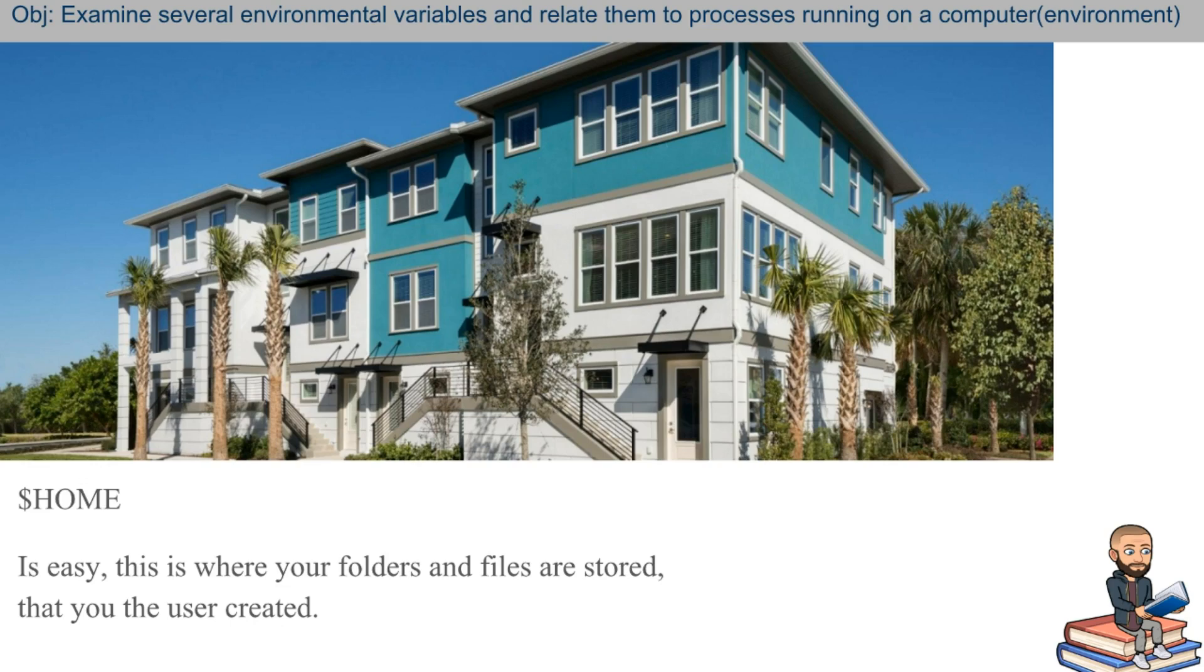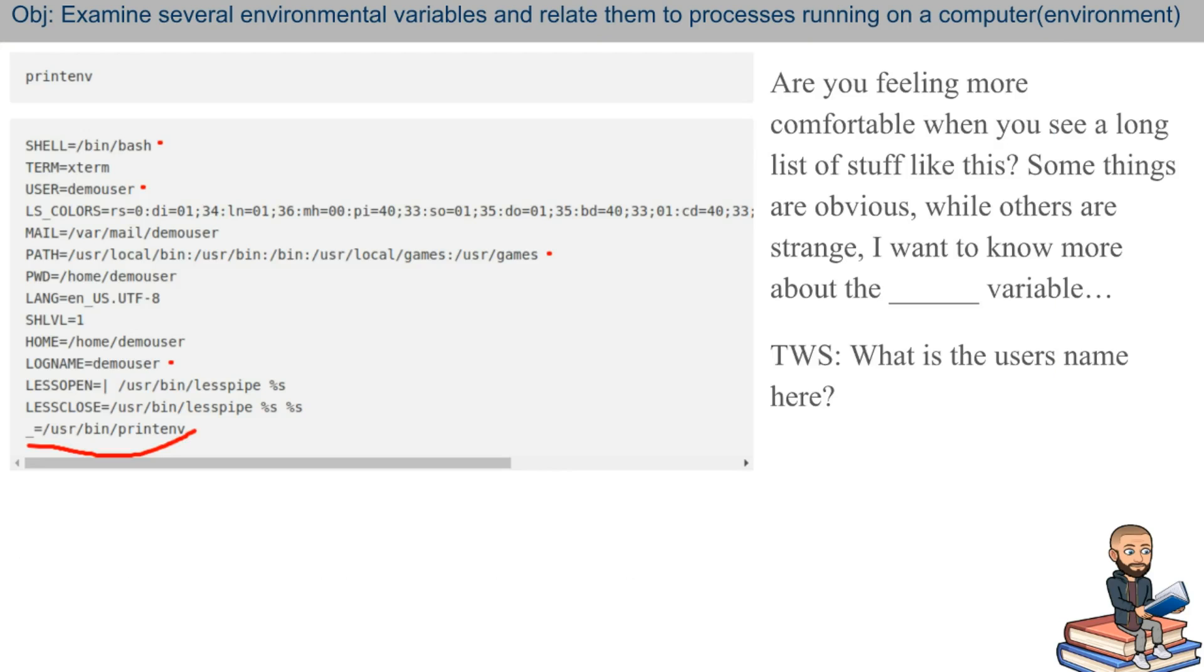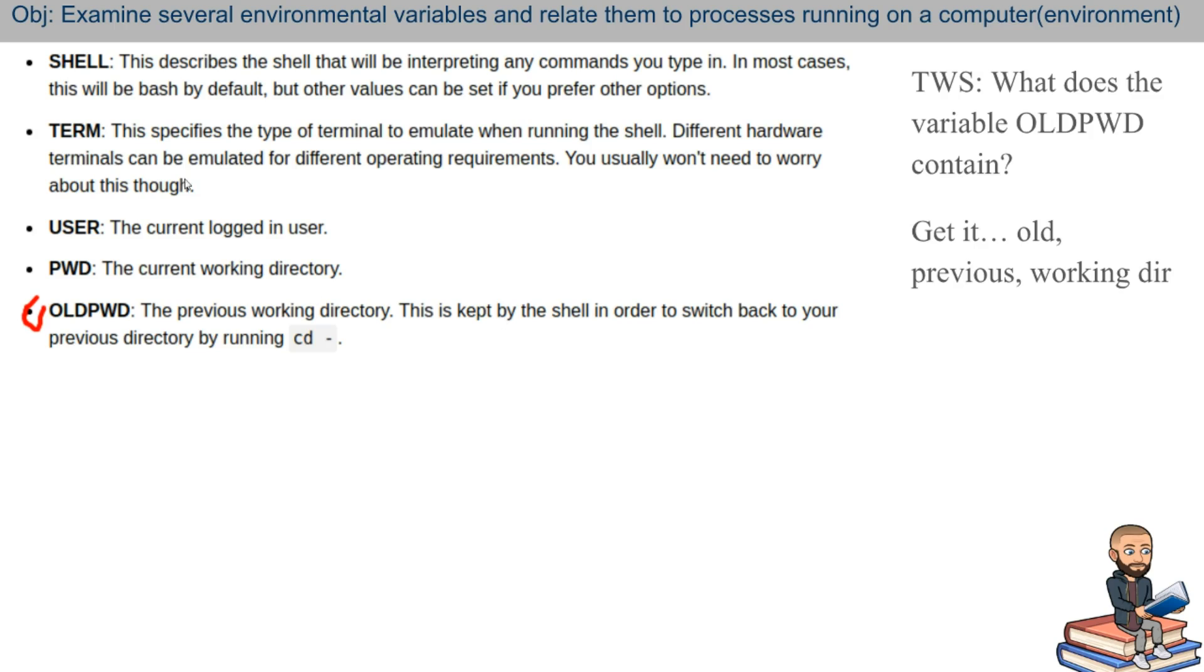One more variable I should tell you about is this home one. This is so easy. This is where your folders and files are stored. That is that you, the user, created. And this one I'll show you myself here. Here you just type in printenv on Linux. And it's the same thing in Windows, just different. So it just looks different. You'll think right here, what's the user name here? Which variable is called user? And then what's the value?